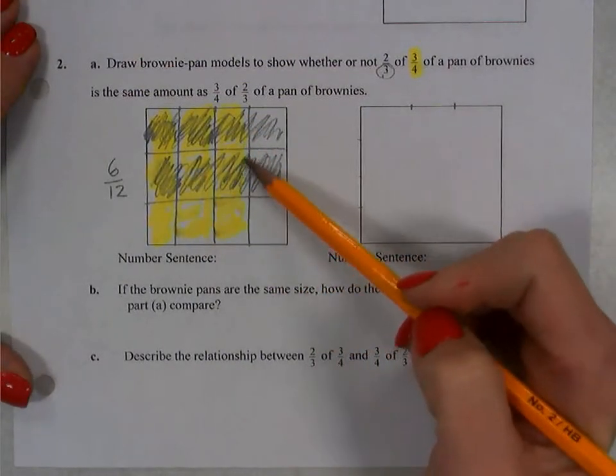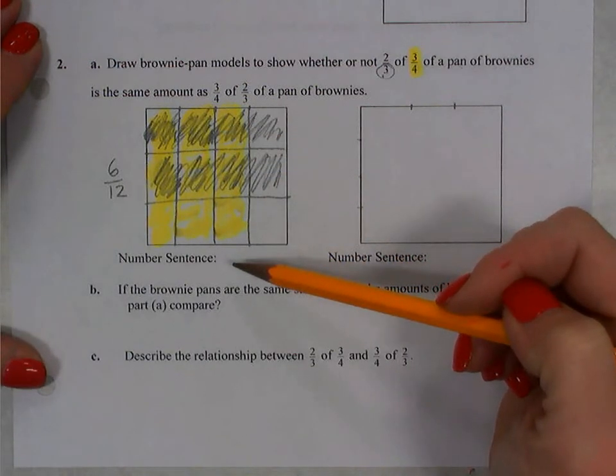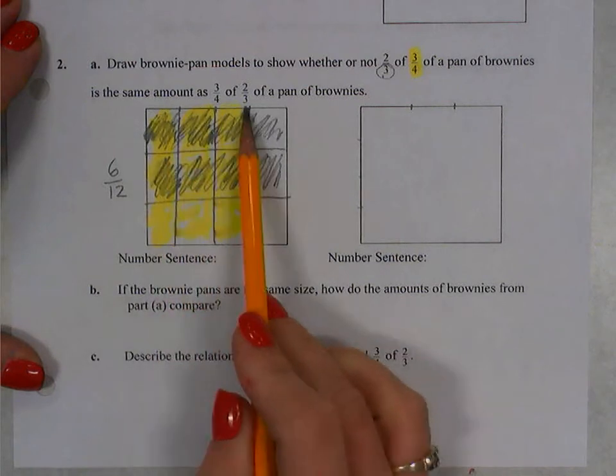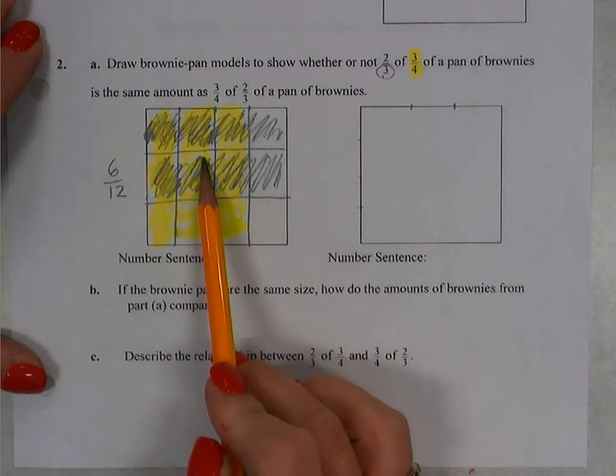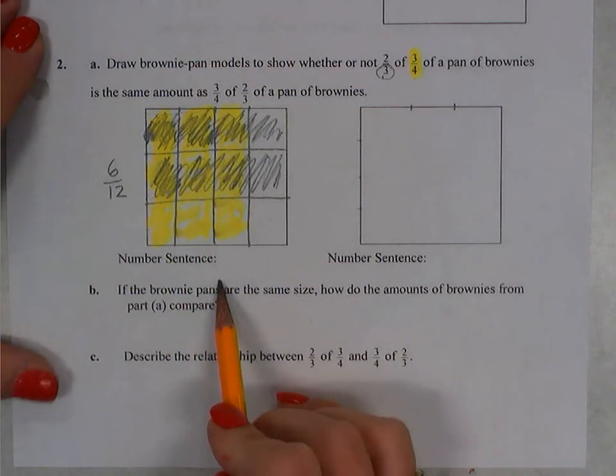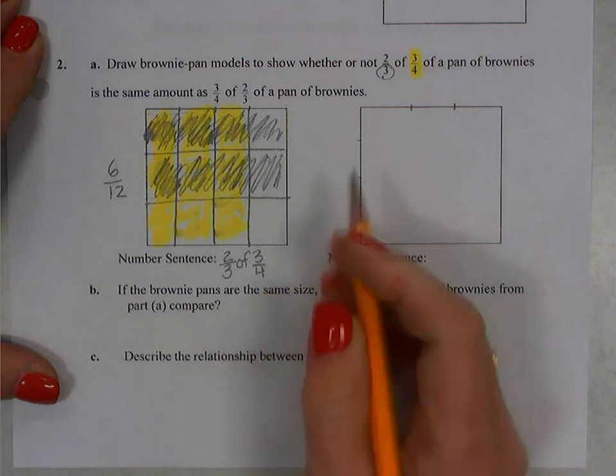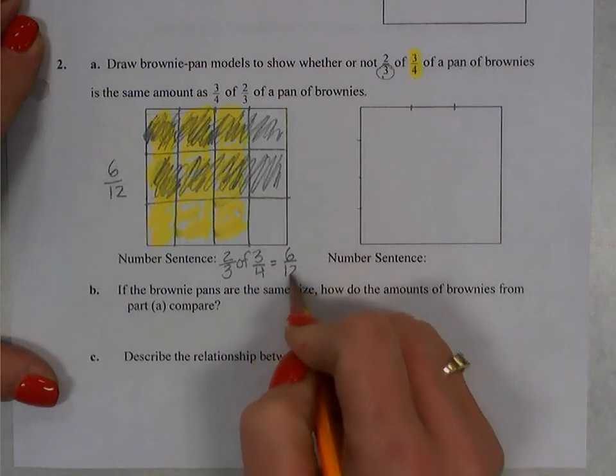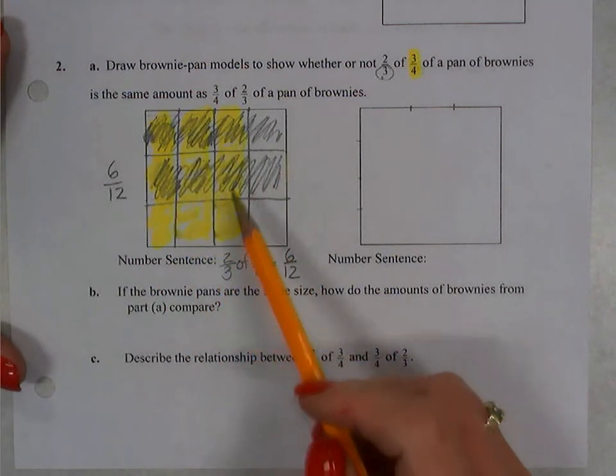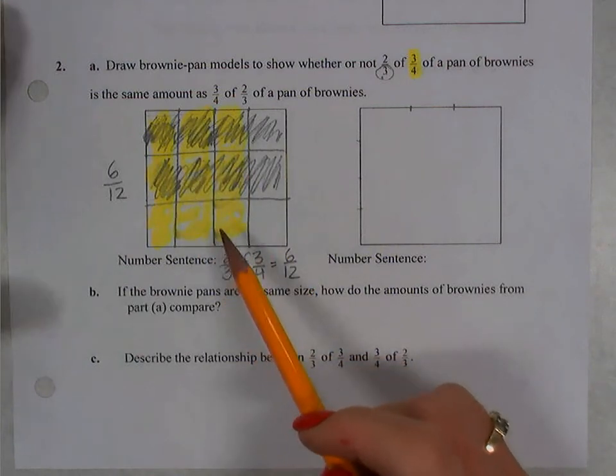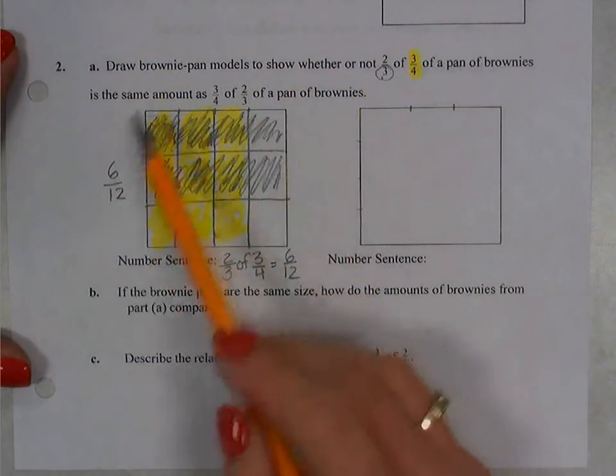So what does that tell us? When we look at the brownie pan, the highlighting shows us the amount of brownies that are first in the pan. And the double shading represents the amount of brownies that our customer is going to come and purchase. So how do we write a number sentence? We say two-thirds of three-fourths of the pan is equal to six-twelfths. In other words, if I'm at a fundraiser and I want to buy brownies, two-thirds of the amount of brownies that are still left in the pan, and there were three-fourths of the brownies left in the pan, I would be asking for six-twelfths of the brownies.